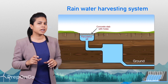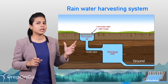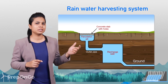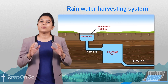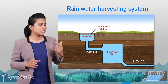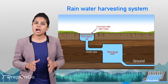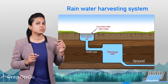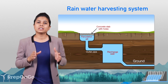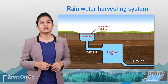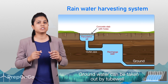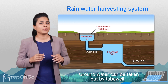The percolation pit is connected to a recharge well through an outlet pipe. This recharge well is 1 meter in diameter and 3 meters deep. When rain falls, the rainwater gets collected into the percolation pit and, after filtration, enters the recharge well through the outlet pipe, where it gradually seeps into the ground. This groundwater can be taken out through tube wells and used as and when required.